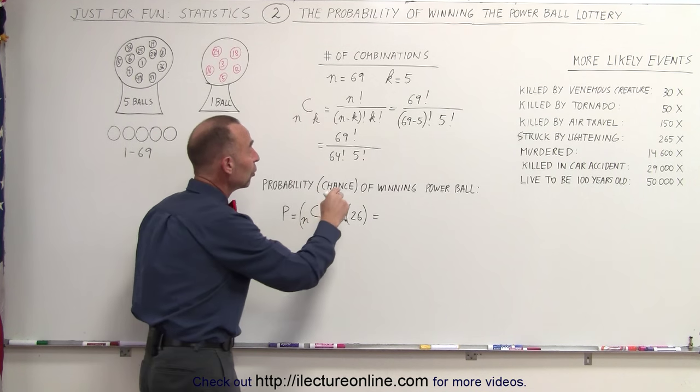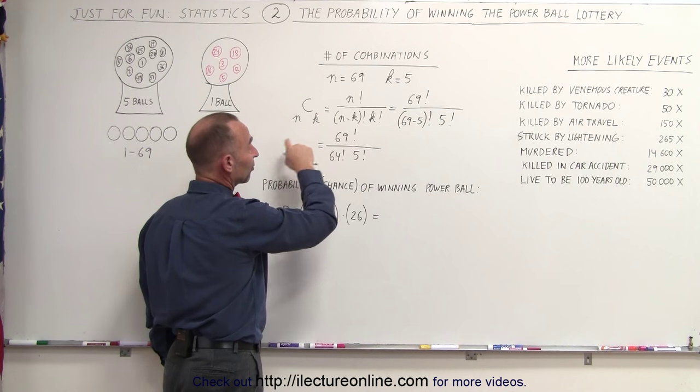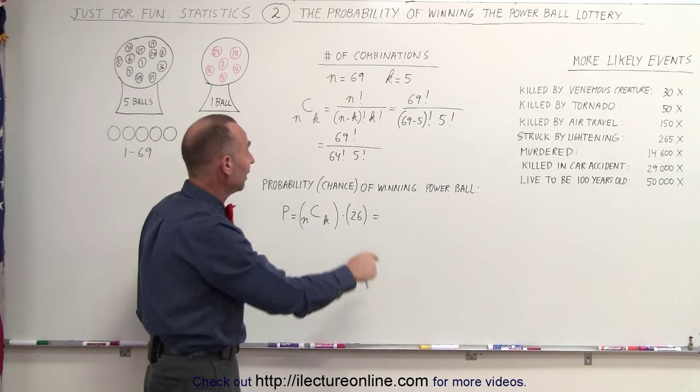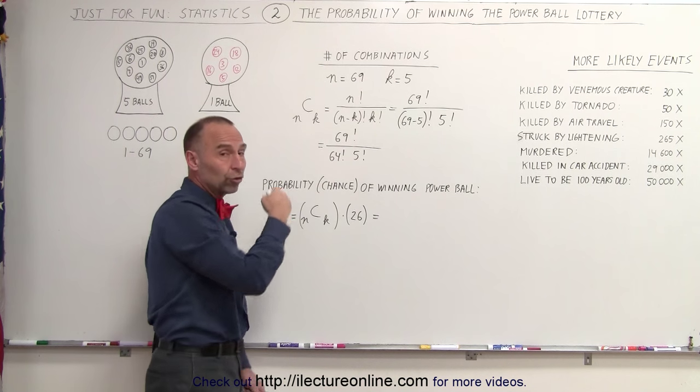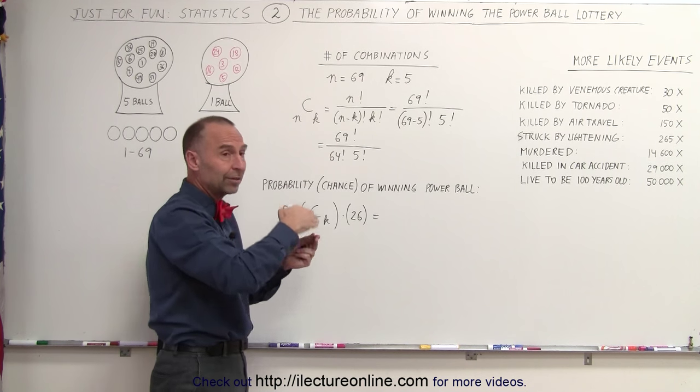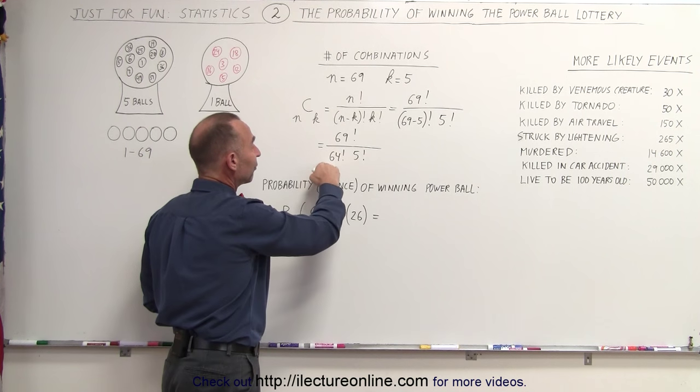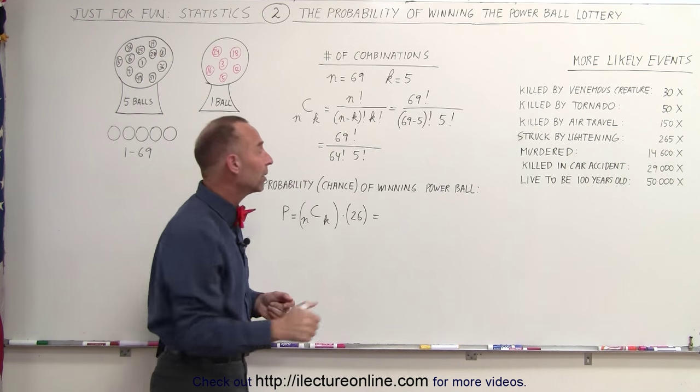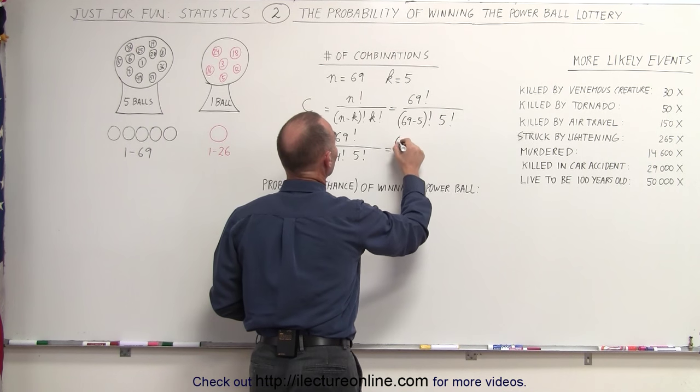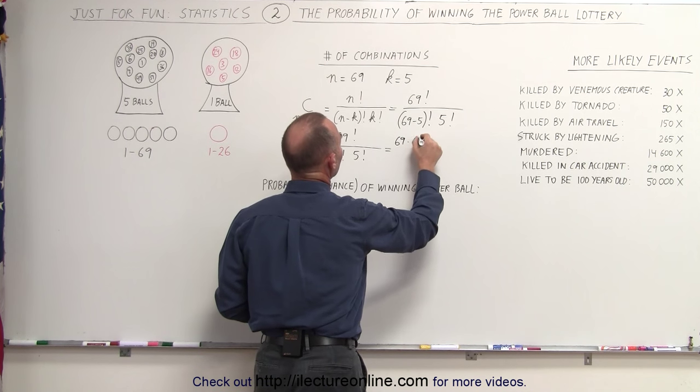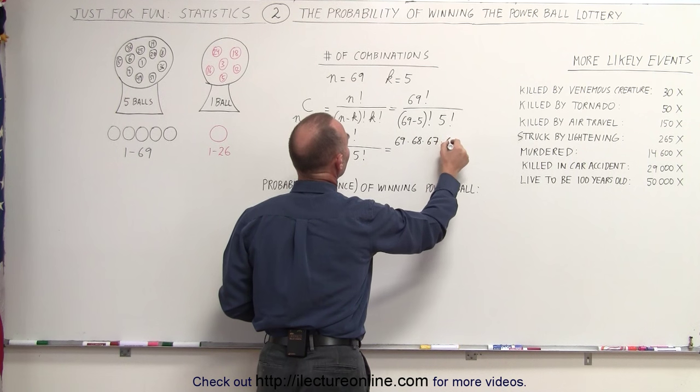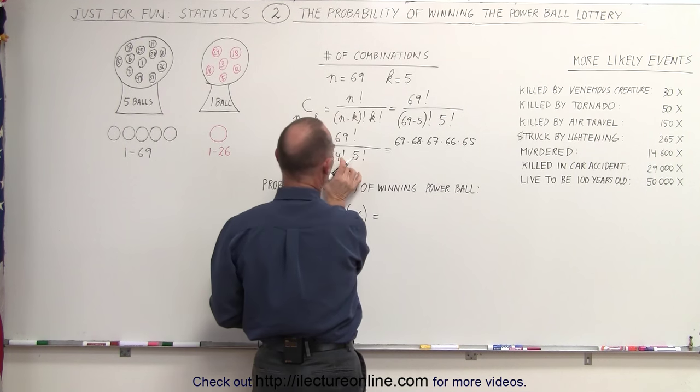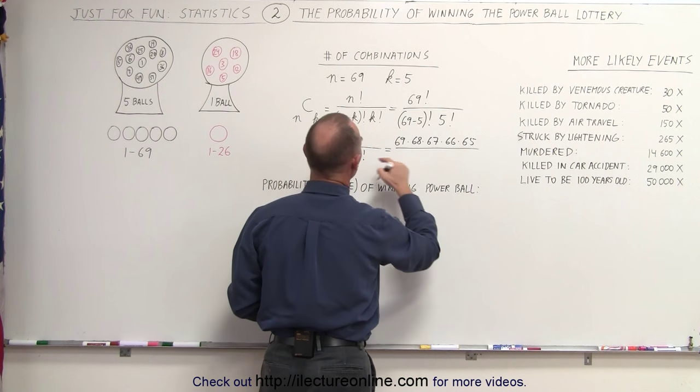Now we can simplify that, because notice that 69 factorial is 69 times 68 times 67 times 66, all the way down to times 1. And 64 factorial starts at 64. So anything 64 and less gets canceled out with anything 64 and less in the numerator. This then becomes 69 times 68 times 67 times 66 times 65. Everything else gets canceled out, and then we still have to divide this by 5 factorial.